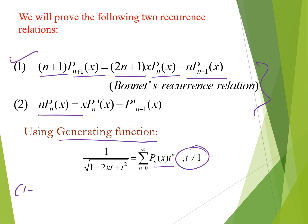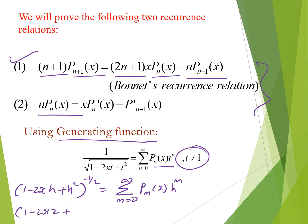In some books, t is replaced by h, so the generating function is written as (1 - 2xh + h²)^{-1/2} = sum_{n=0}^{∞} P_n(x) h^n. Some books also use z, writing (1 - 2xz + z²)^{-1/2} = sum_{n=0}^{∞} P_n(x) z^n.